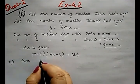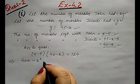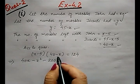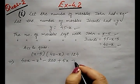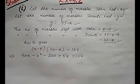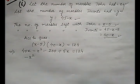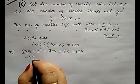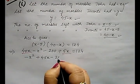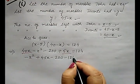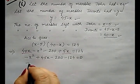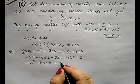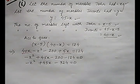x into 40 becomes 40x, x into x is minus x square, minus 5 into 40 is 200, minus into minus becomes plus 5x, equals 124. Simplifying more, minus x square plus 45x minus 200, transposing this side minus 124 equals 0. So it becomes minus x square plus 45x minus 324 equals 0.